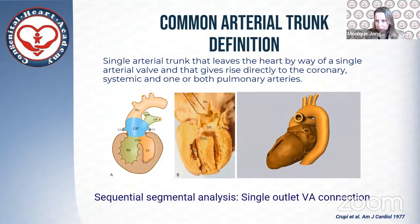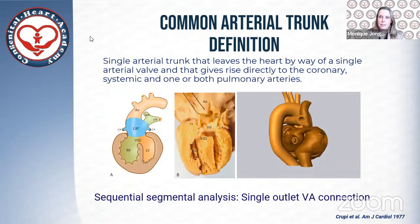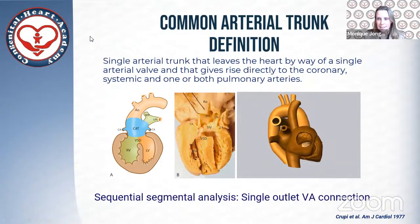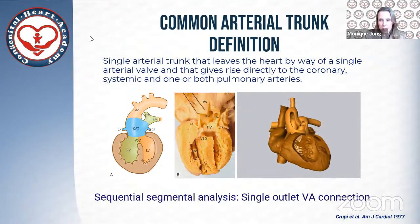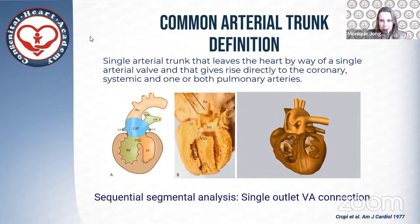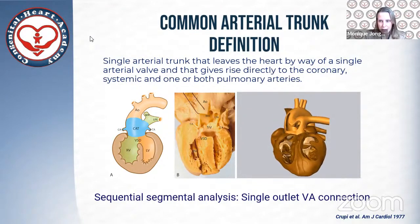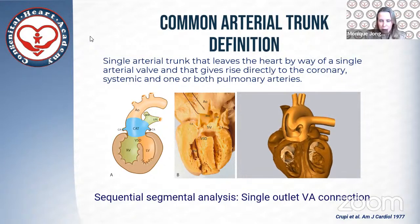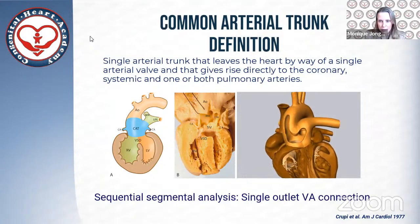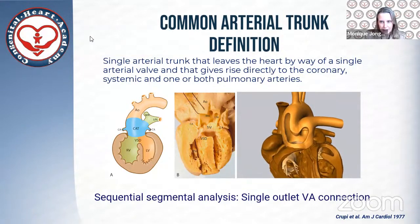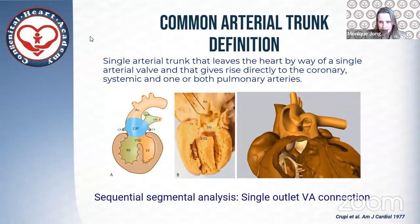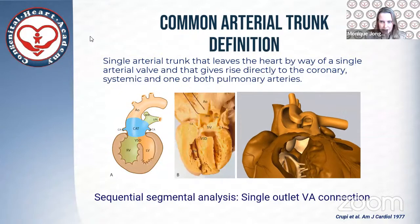So, I have a little bit of a problem. A common arterial trunk is defined as a single arterial trunk that leaves the heart by way of a single arterial valve, and that gives rise directly to the coronary, systemic, and one or both pulmonary arteries. And according to the segmental sequential analysis, there is a single outlet ventricular arterial connection.